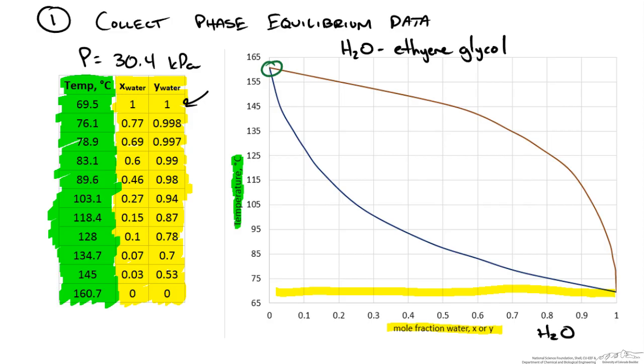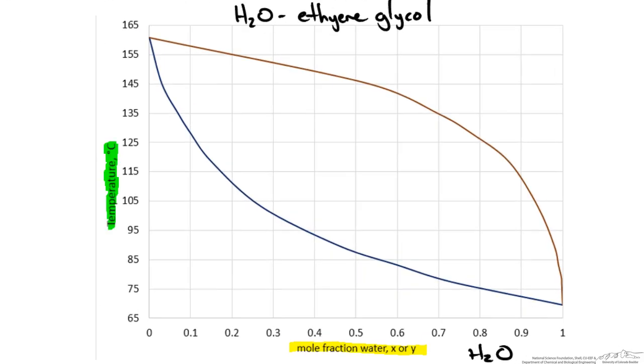So for binary mixtures where we don't have azeotropes or some non-ideal behaviors, we should expect this downward plot trend for the more volatile species. All right, so let's look at a composition of 50% water and 50% ethylene glycol. At a low enough temperature we will be below this bottom line and we will have one phase. This phase will be liquid.